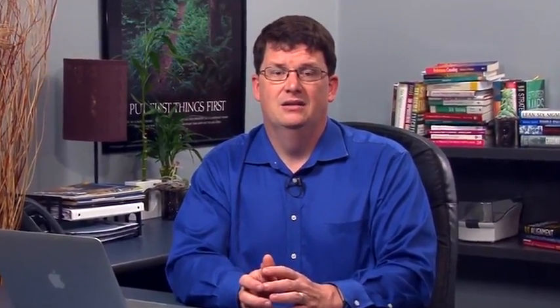System elements are organized into a structure or hierarchy. The 15288 standard describes a system hierarchy where the system life cycle processes are described in relation to a system composed of a set of interacting system elements, each of which can be implemented to fill its respective specified requirements. For very broad perspectives, a system of systems is a hierarchy of elements where the elements are independent — managerially and/or operationally — and the integration of those independent systems gives results that otherwise would not be possible.